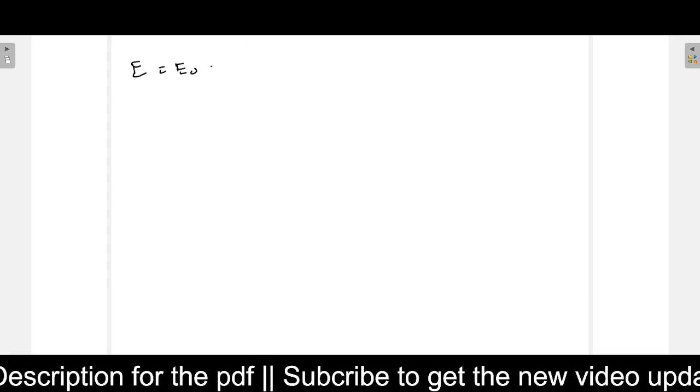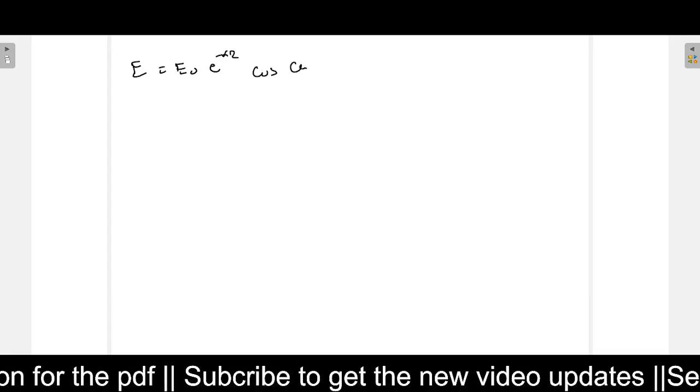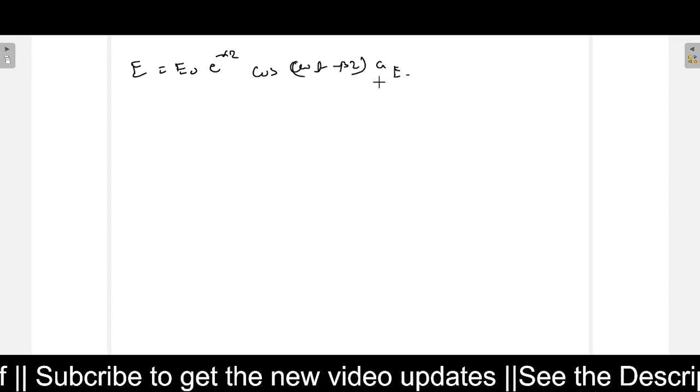Now, next question is to find the H field. So what will be H field? E equals E_naught e^(-alpha*z) cos(omega*t - beta*z) into a_E. So we need to find what will be a_E.